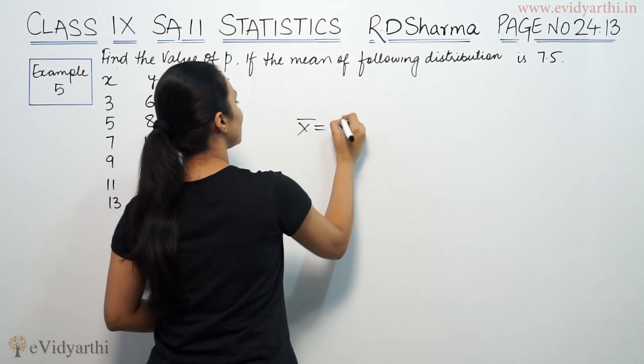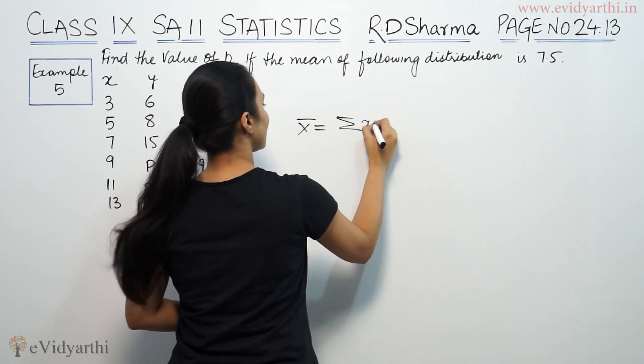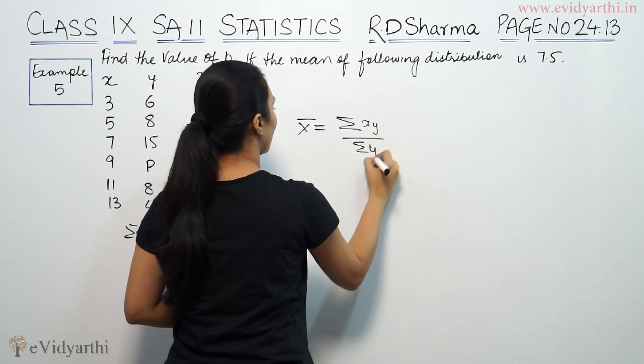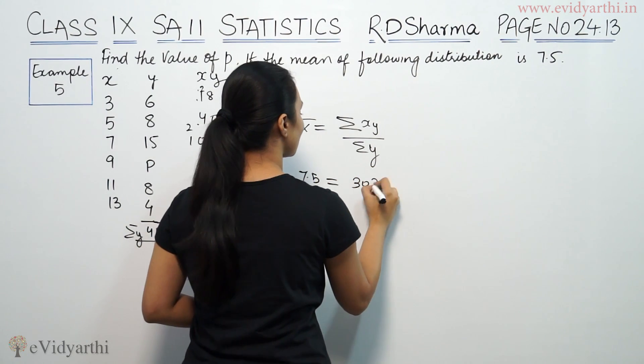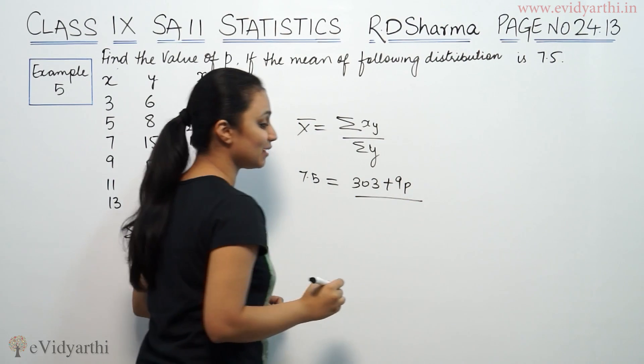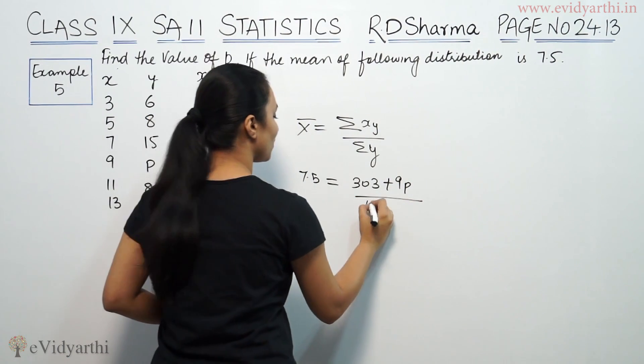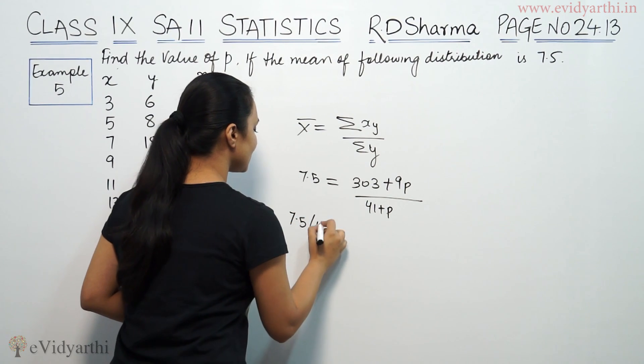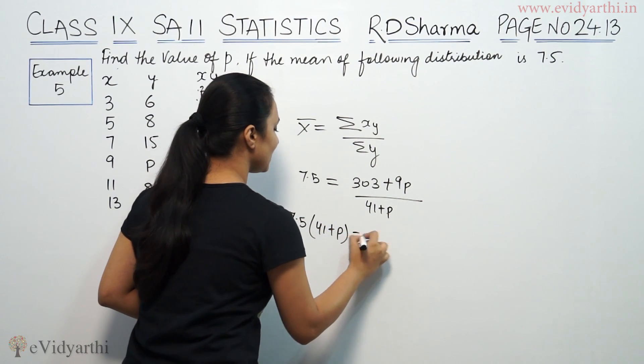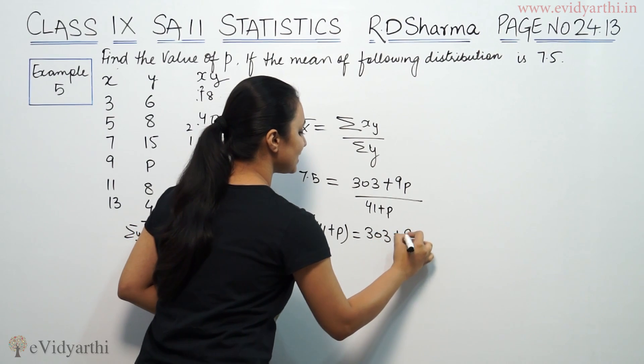So, mean is equal to summation XY by summation Y. So, mean, we have given as 7.5. XY summation is 303 plus 9P. Y summation is 41 plus P. So, this will be cross multiply. 7.5 times 41 plus P equals 303 plus 9P.